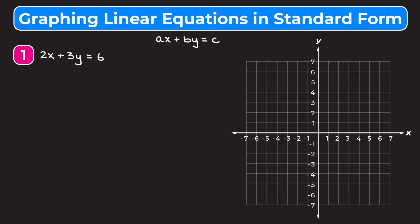I think intercepts are typically easier when you're graphing in standard form, but some students like to change the equation into y equals mx plus b form, so I'll also show you that. Let's jump into example one, which is 2x plus 3y is equal to 6.